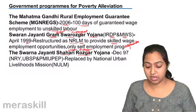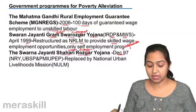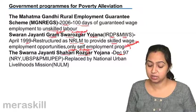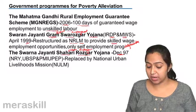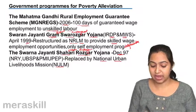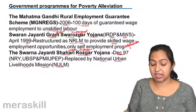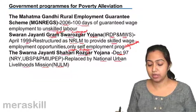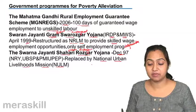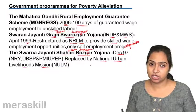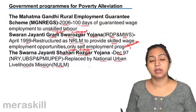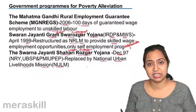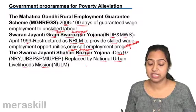The Swarna Jayanti Shahri Rozgar Yojana was started in December 1997. It was made by combining NRY — Nehru Rozgar Yojana — UBSP, and the Prime Minister's Integrated Urban Employment Programme. It is also known as NULM, which is the National Urban Livelihood Mission. So, NRLM is the National Rural Livelihood Mission and NULM is the National Urban Livelihood Mission. These are programs started by the government for poverty alleviation, to provide employment to people — both unskilled and skilled laborers — so they earn income and rise above the poverty line.